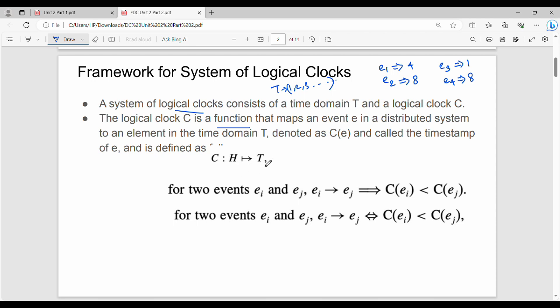First property is consistent. If there is a causal dependency where e_a is the cause and e_j is the effect, then e_a implies e_j. This must imply timestamp of e_a must be less than or equal to timestamp of e_j. If there is a causal relationship between two events, the timestamp of my first event should be less than timestamp of my second event.